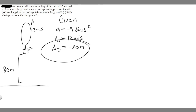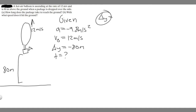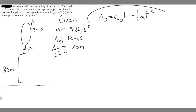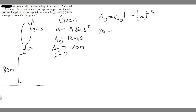We're trying to find time, because the question says 'how long,' so t equals question mark. The formula we're going to use is delta y equals v-sub-zero-y times t plus one-half a t-squared. This is probably the most common kinematic formula. We have every variable except time, so we can solve for it. Plugging in: minus 80 equals 12t plus one-half times minus 9.8 times t-squared. That simplifies to minus 80 equals 12t minus 4.9t-squared.